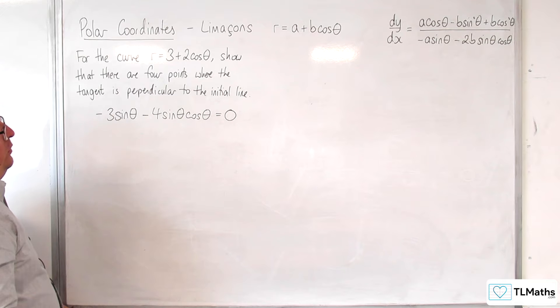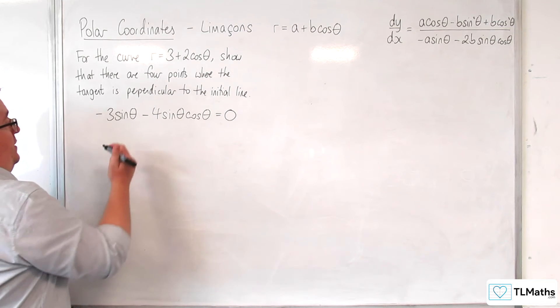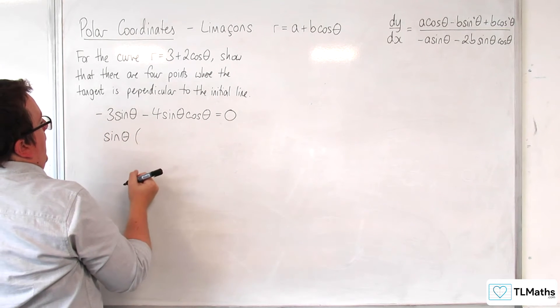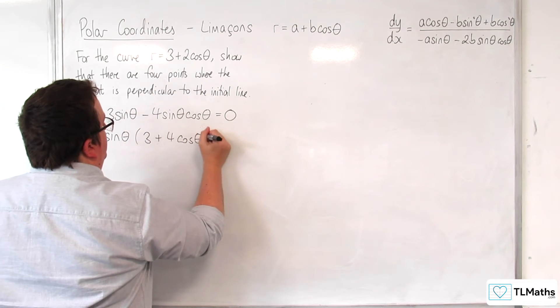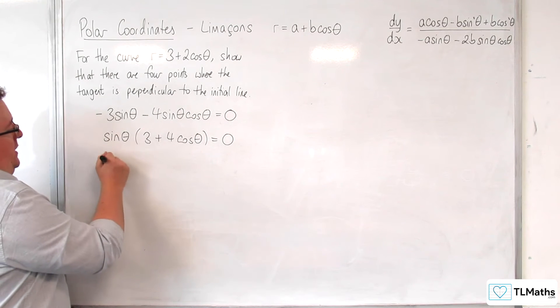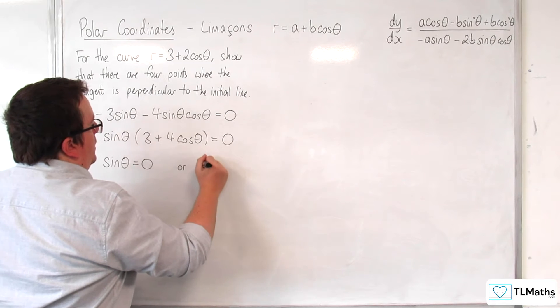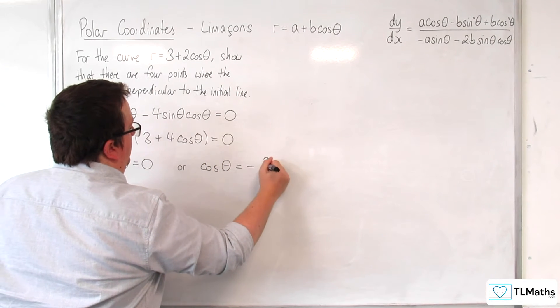So what I'll do is I'll multiply through by minus 1, and I'm going to factor out the sine theta. So sine theta, and we'll have 3 plus 4 cosine theta in a bracket equals 0. So either the sine theta is equal to 0 or cosine theta is going to be equal to minus 3 quarters.